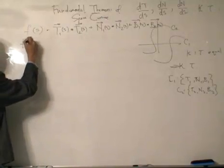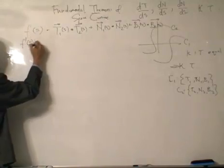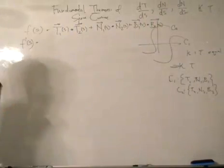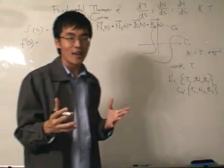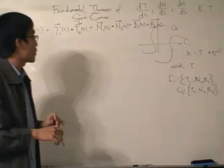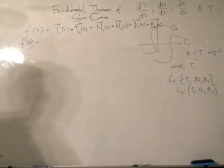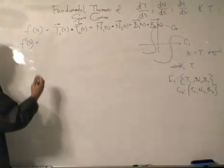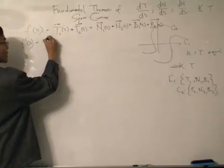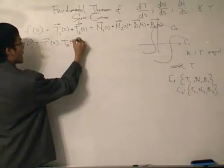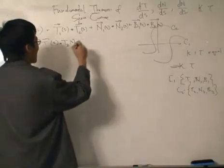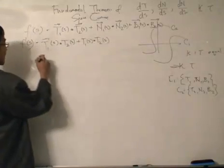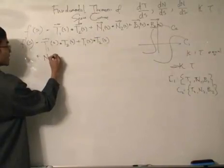The first derivative of f(s) requires us to use the results of the Frenet-Serret equations. I would like to take the honor of differentiating this monster of equations. The approach is: differentiate the first vector and keep the second, dot them together, then keep the first and differentiate the second — doing this for each of the T, N, and B terms.